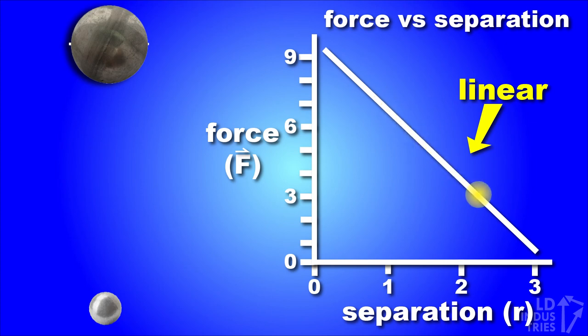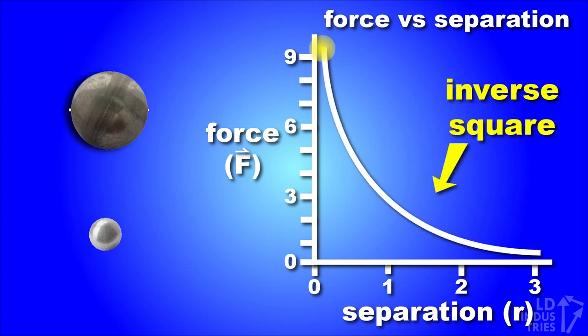The relationship was an inverse square one. When the spheres were three times further apart, the force between them was three squared, or nine times smaller.